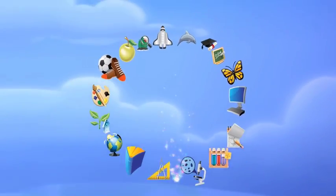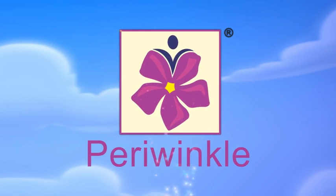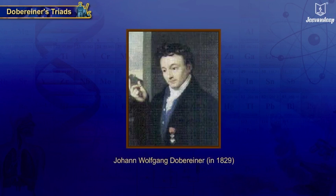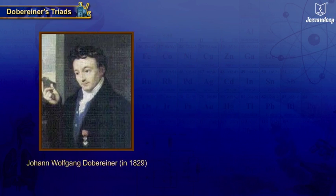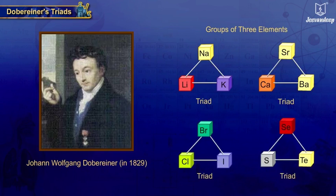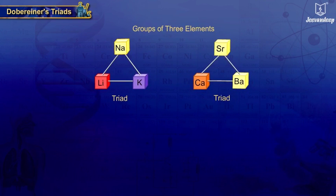Johann Wolfgang Dobereiner, a German scientist in 1829, found some groups of three elements which showed similar properties. These groups of three were called triads.